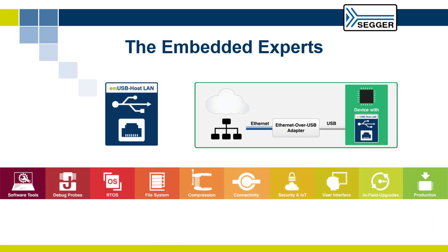This video showed you how you can enable Ethernet on any embedded system via USB host, using M-USB-Host LAN and an Ethernet over USB adapter, a phone, or a gateway. Add network capabilities to your products with USB host port with only a firmware update.